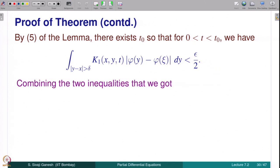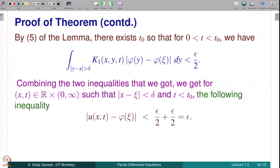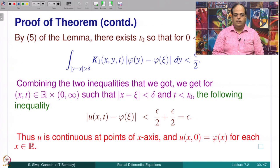Combining the two inequalities, whenever |x − ξ| < δ and t < t₀, we have |u(x,t) − φ(ξ)| ≤ ε. Thus u is continuous at points of the x-axis and u(x,0) = φ(x) for each x in ℝ.